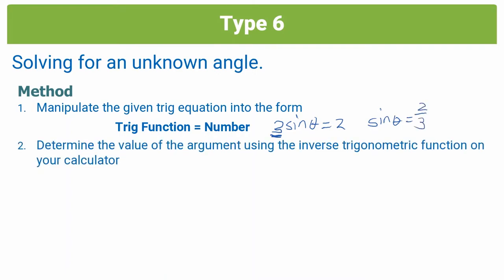Step 2, determine the value of the argument using the inverse trigonometric function of your calculator. So the argument in a trig function is this here. If you have sine there and θ there, sine is your trig function. And whatever's in the brackets of sine is called your argument.